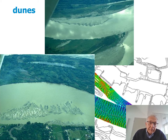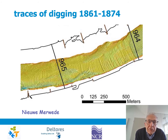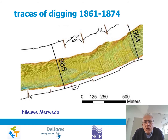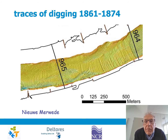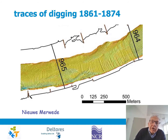Dunes can also be seen on this multi-beam echo sounding result of the Nieuwe Merweide River in the Netherlands. Interestingly, you not only see dunes but also peculiar features that are the traces of digging, because the bed consists of very resistant clay. This river is not natural — it was excavated in the 19th century, and the traces are still visible in the hard clay on the riverbed.